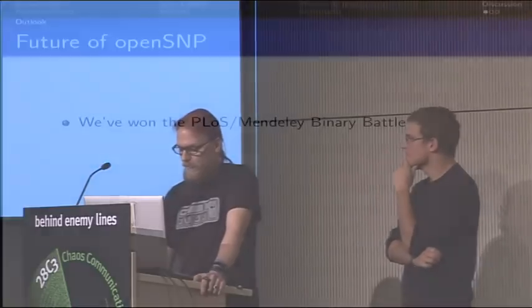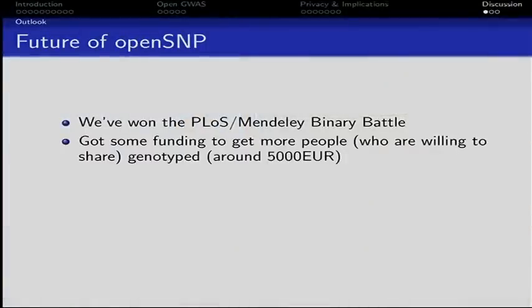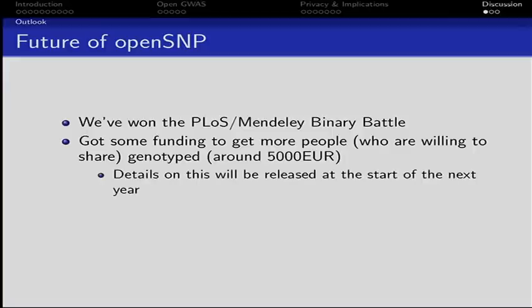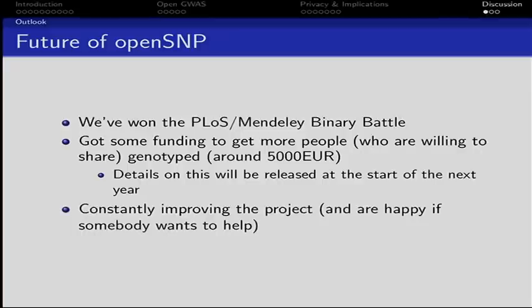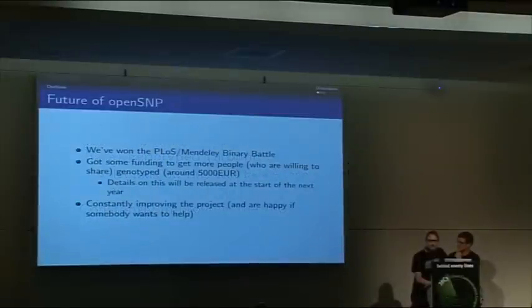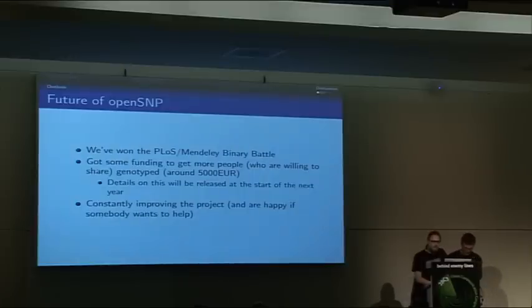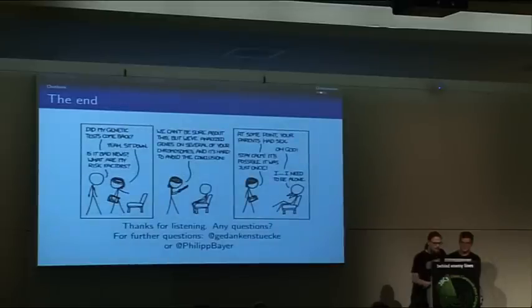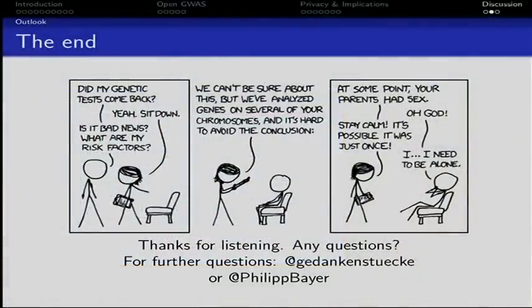So far we have won the Public Library of Science award with OpenSNP, and we've got some funding through the German Wikimedia Foundation — it's only 5,000 euros, but that would be about 25 more people genotyped with their data publicly available. If you're interested in getting genotyped, we'll release more details next year. We are constantly improving the project — currently working on including an API to deliver genetic information using the Distributed Annotation System, which is widely used in genetics for genome browsers, so others can build third-party tools out of it.